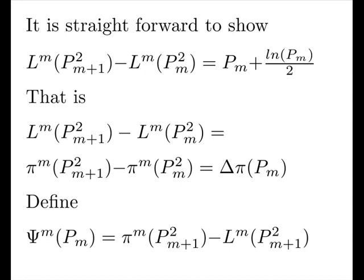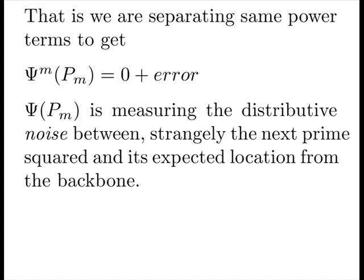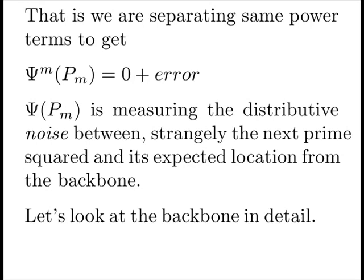Define Ψ of M to be the difference between π of M and L of M at our next prime squared. That is, we are separating same power terms to get our Ψ of Pₘ is equal to 0 plus an error term. Ψ of M is measuring the distributive noise, strangely, between the next prime squared and its expected location from the backbone. And, it's dependent upon the current prime.